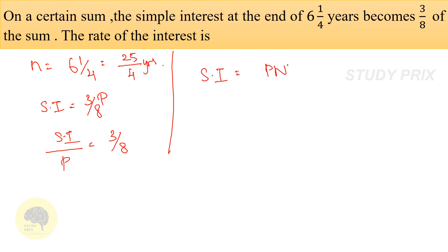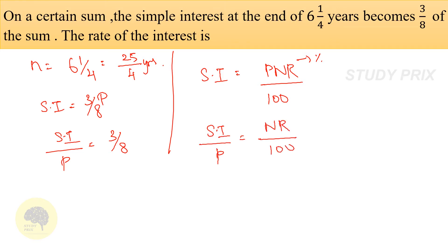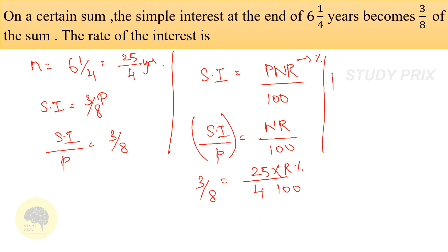Using the formula SI = PNR/100, we need to find the rate percentage. SI/P = 3/8 = (25/4 × R) / 100. Therefore rate percentage = (3/8) × 400/25. Simplifying this we get 6%. So 6% is the rate of interest percentage.